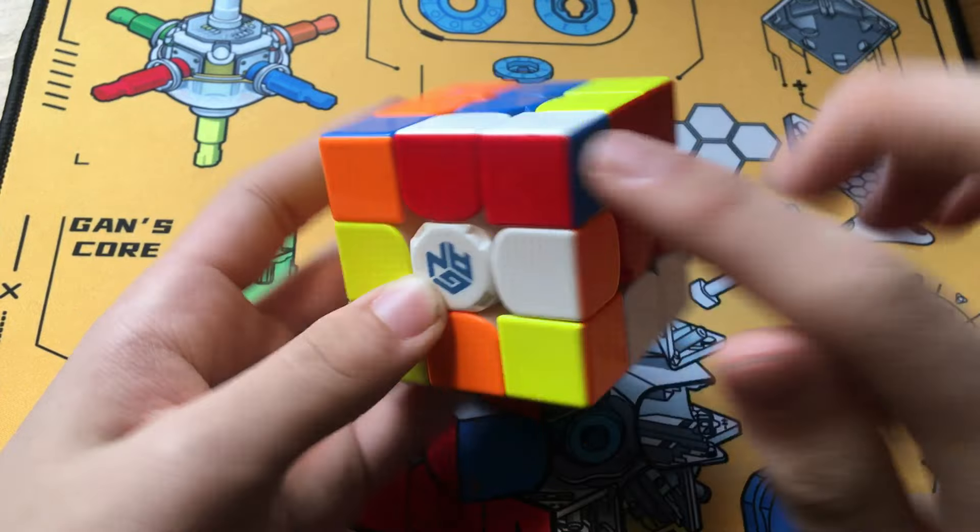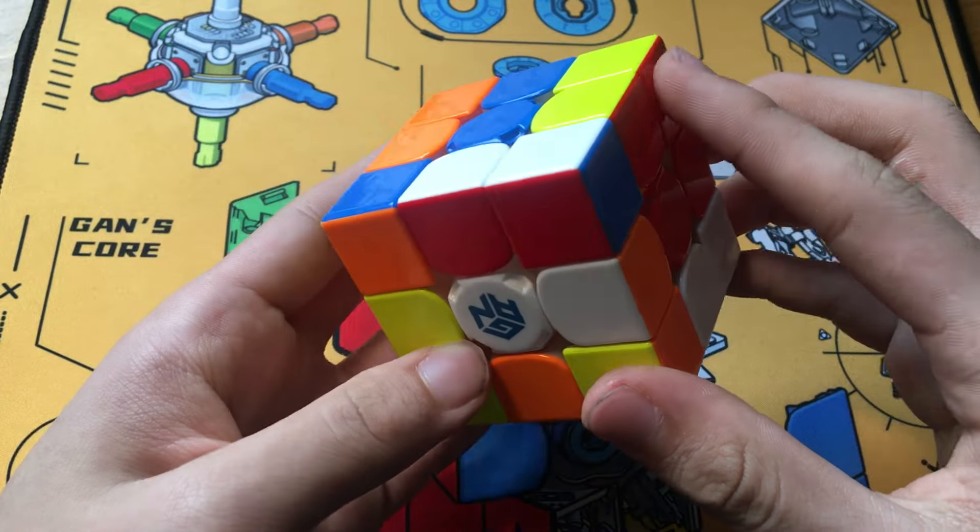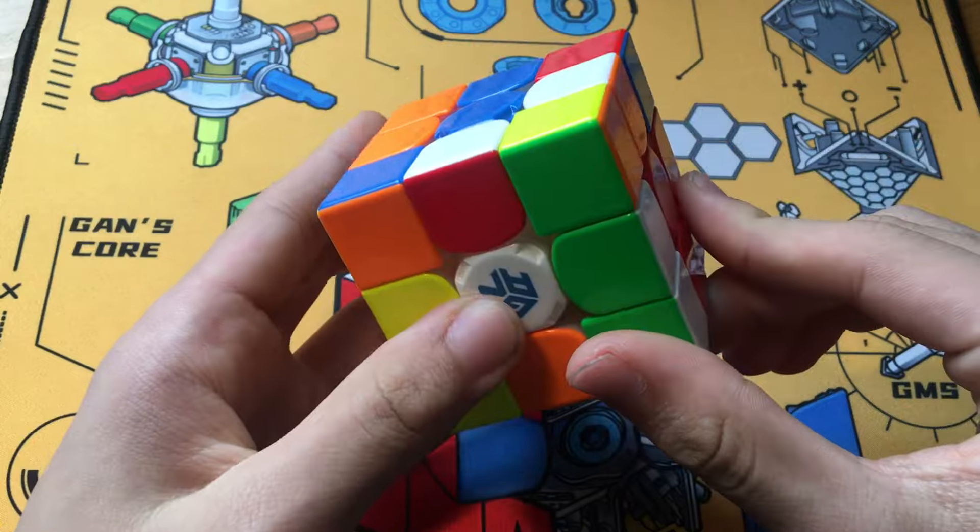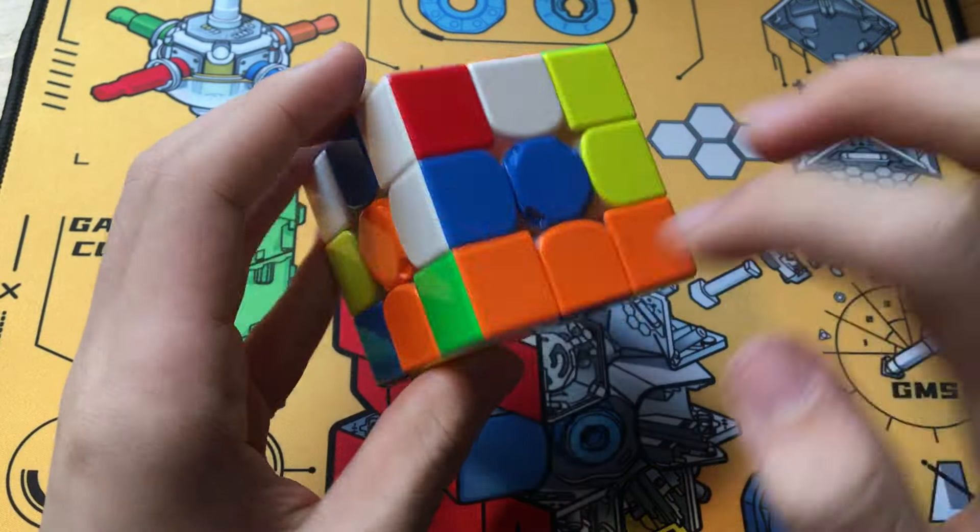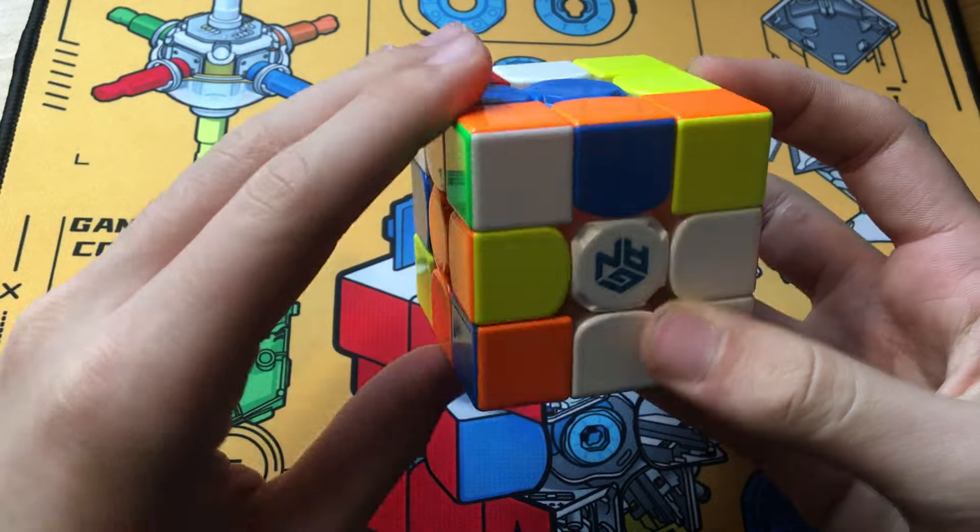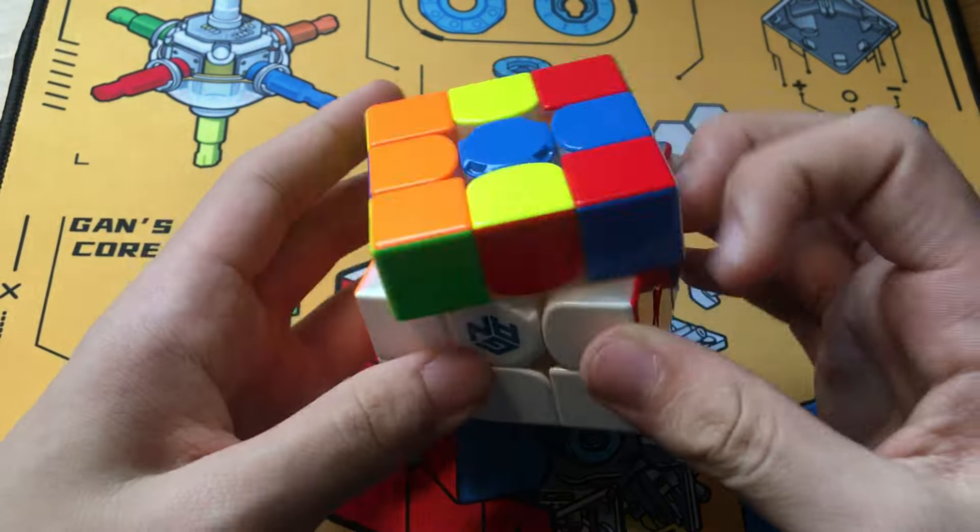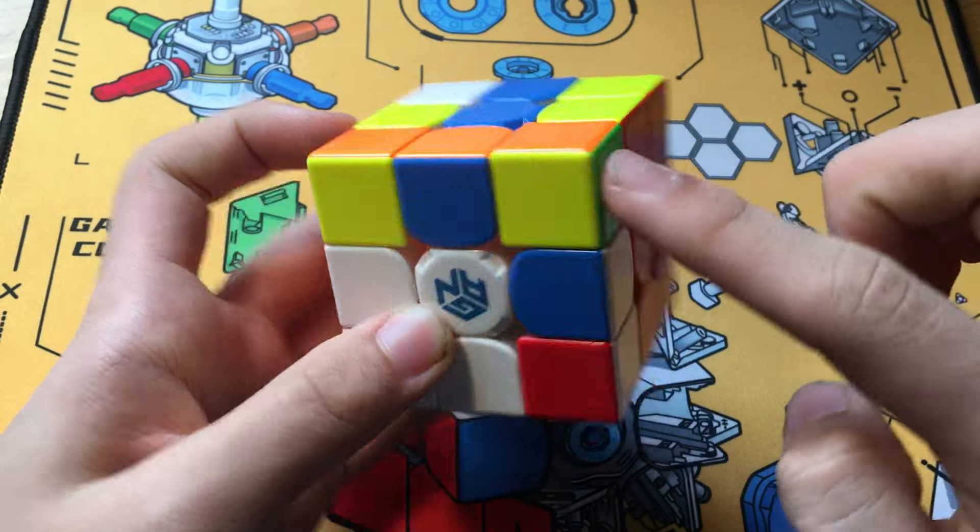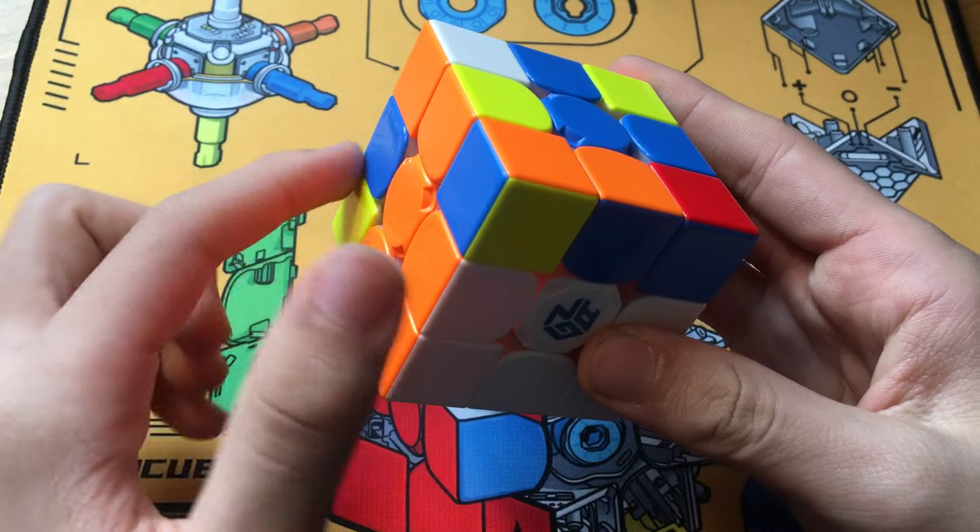Notice here that we have this F2L edge, these two, and this pair not being disturbed. We can just insert this edge into its slot to pair these up and not disturb these two, so we can solve this into the front and solve these two into the back. Now we have this final pair into the back left.